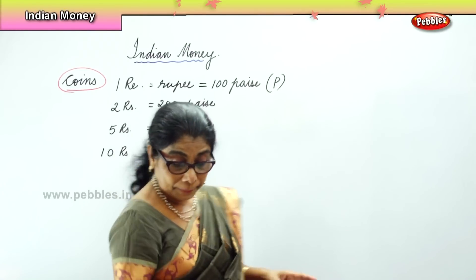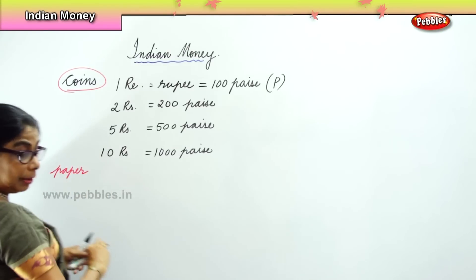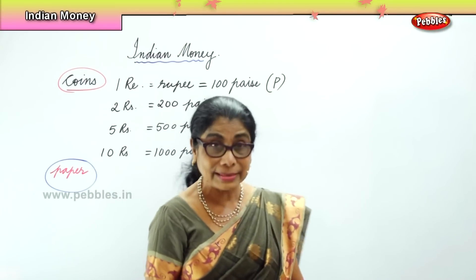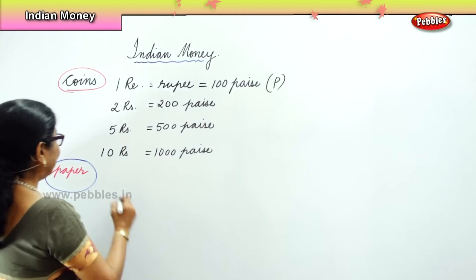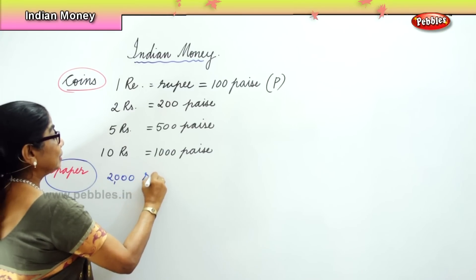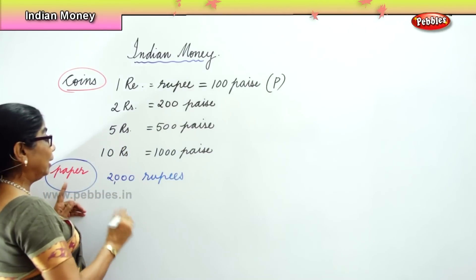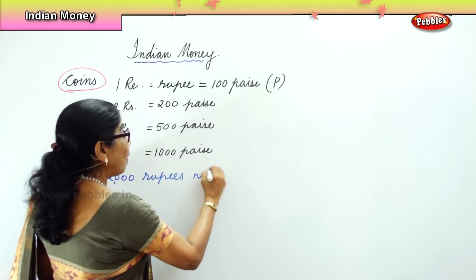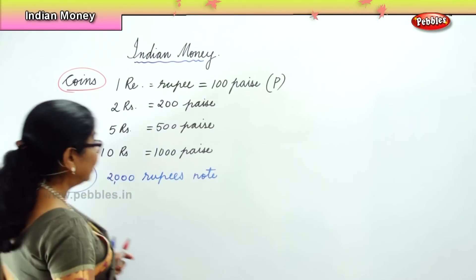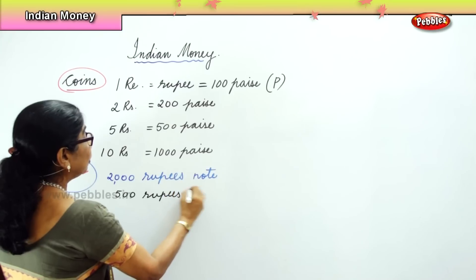Next we have paper money. What paper money do we have in Indian currency? First, we begin with the big denomination. We have a 2,000 rupee note. And then we have a 500 rupees note.